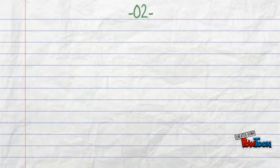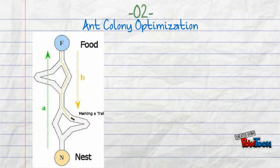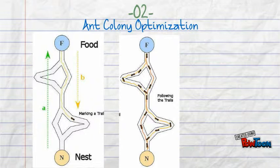The second algorithm is called ant colony optimization. The ants wander randomly, and when they find food, return to their colony while laying down pheromone trails.